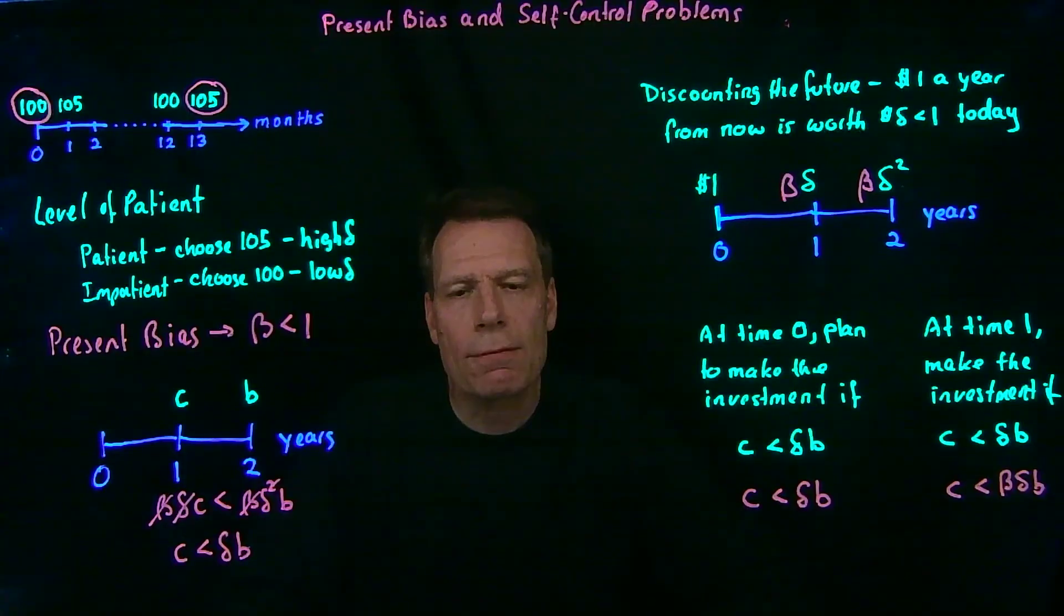So we're making a plan for the future, but when the future becomes the present, we don't execute that plan. Our behavior is time inconsistent, and we have a self-control problem in the sense that we can't follow through on plans we make for the future.